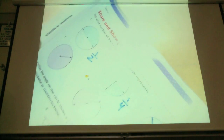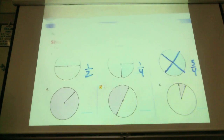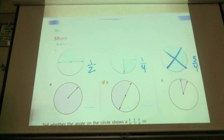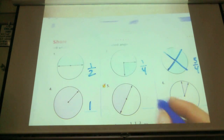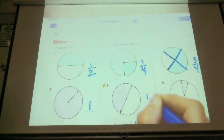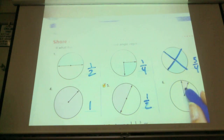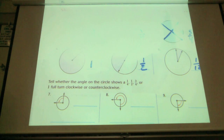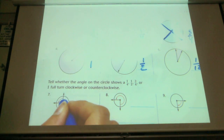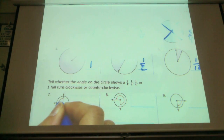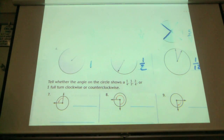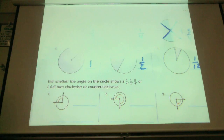If you turned it this way, it makes more sense. What is the fraction of this one? One whole. This one? One half. Tell whether the angle on the circle shows a fourth, a half, three fourths, or one full turn. The little arrow shows how much it's turning. Does that show a fourth, a half, three fourths, or a full turn? One fourth of a turn.